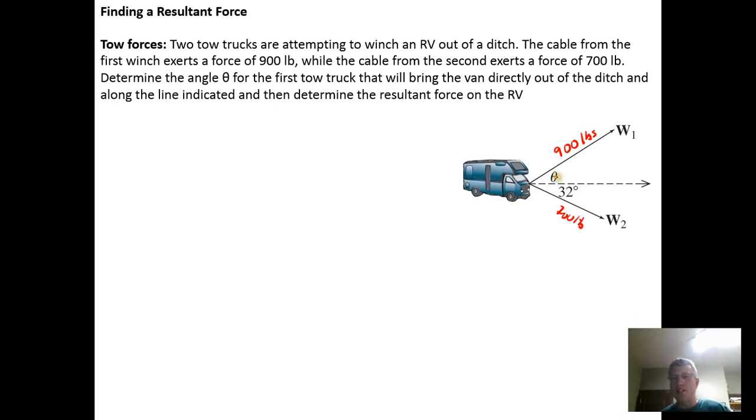So the idea is really simple. If we want the van, this RV, to move along this line in the horizontal plane and we don't want it to move either this direction or this direction, we need the vertical component of the force from winch one, which is this guy right here.